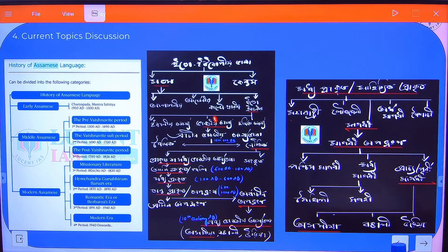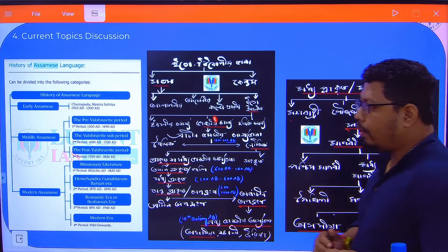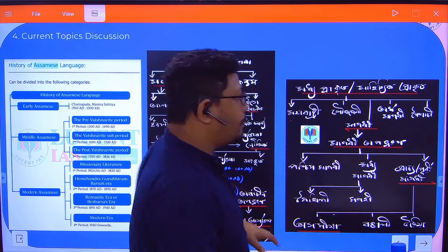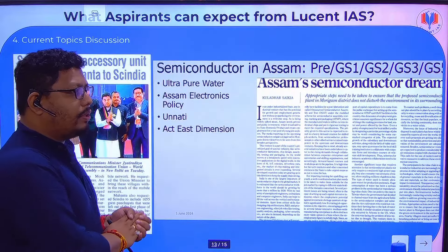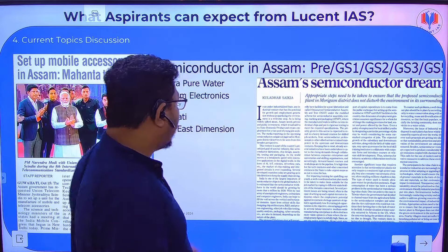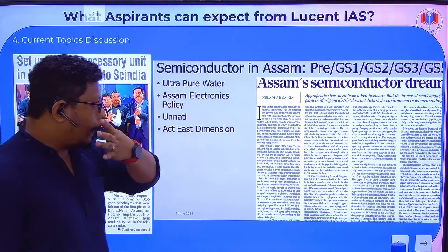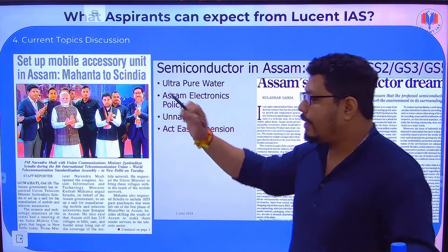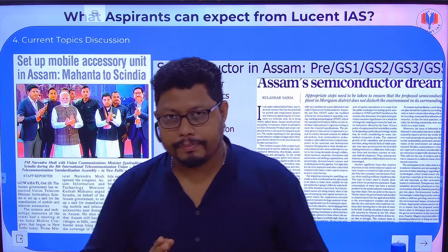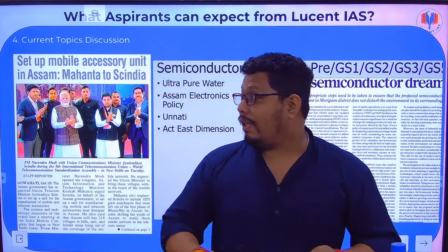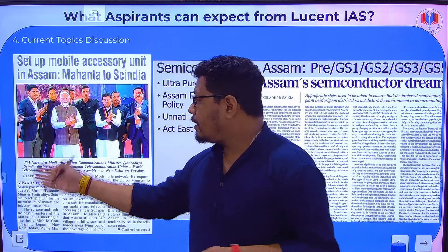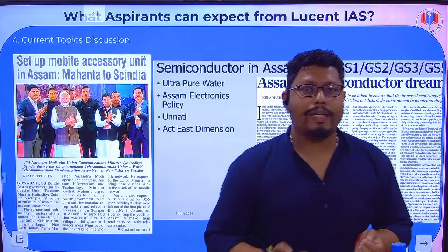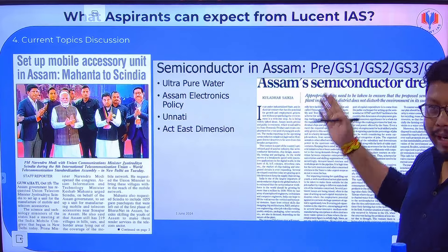Classical languages like Maharashtri are also important for the interview — these are key areas of Indian knowledge. Similarly, topics like the semiconductor industry are important: ultra-pure water requirements, electronics policy, and how Assam has been able to set up a mobile accessory unit. We need to look at how the semiconductor industry helps develop the Assam economy, the mobile accessory industry's role, employment generation, positive aspects, and GDP impact — these are current affairs we will be discussing.